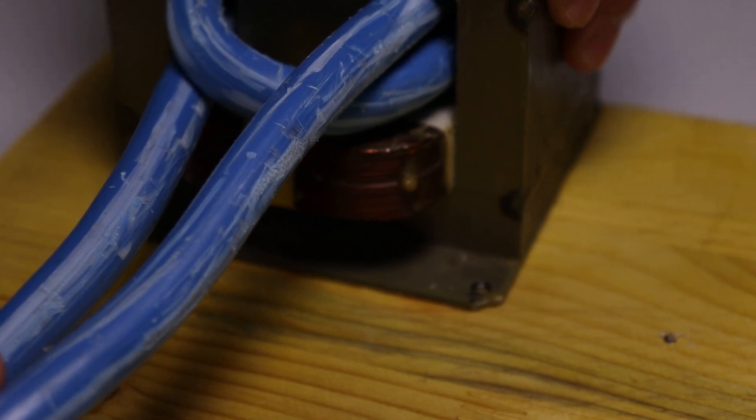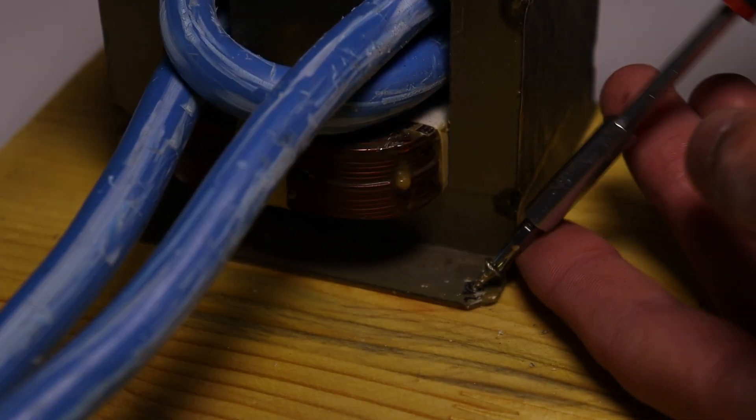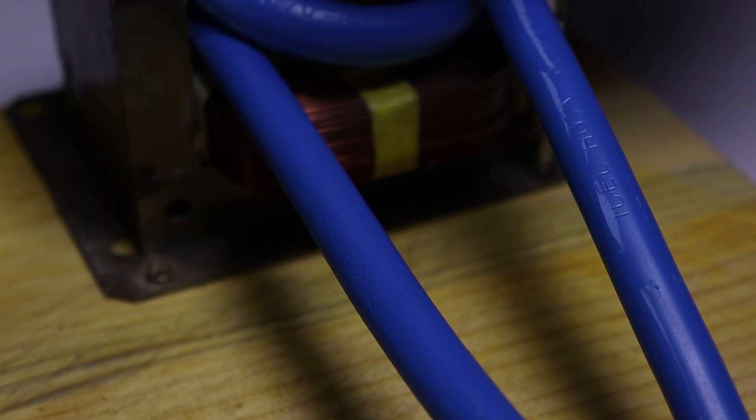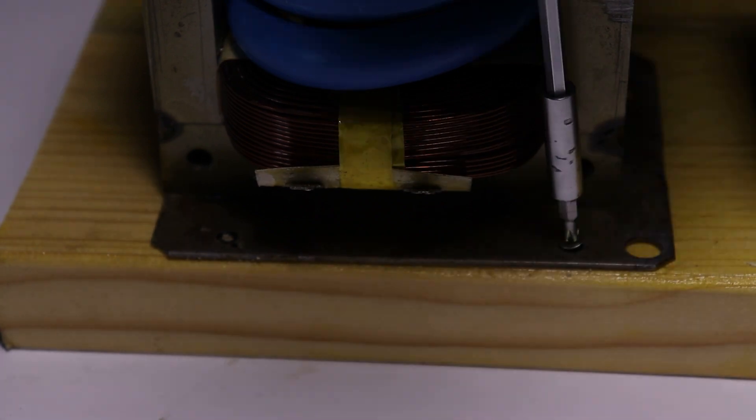Next I took both of my transformers and placed them on the wooden base in line with previously drilled holes. So after that I used my screwdriver and 8 tiny wood screws, which I used to secure the transformers in place by screwing them in previously drilled holes.